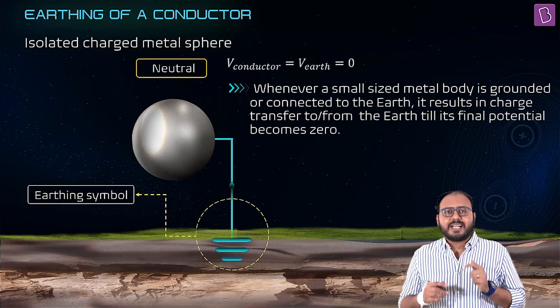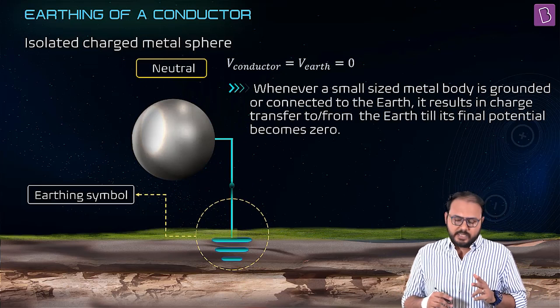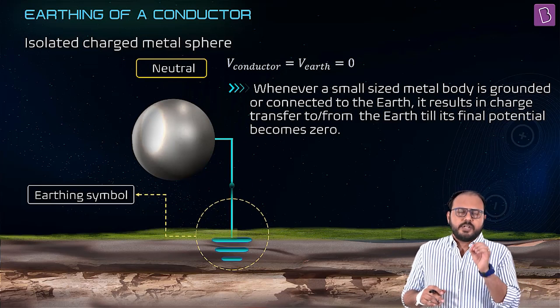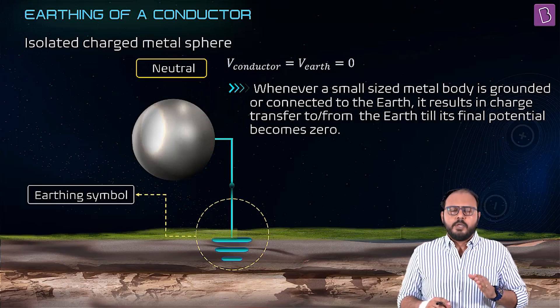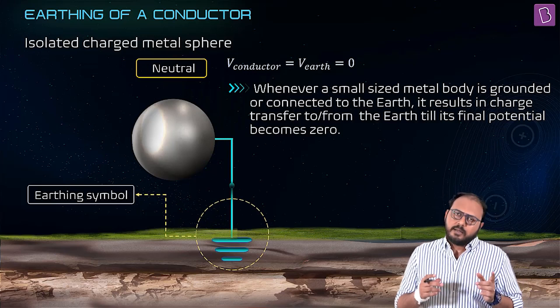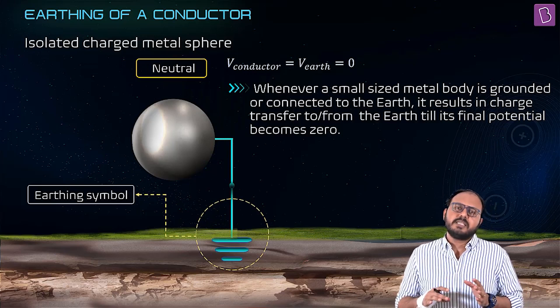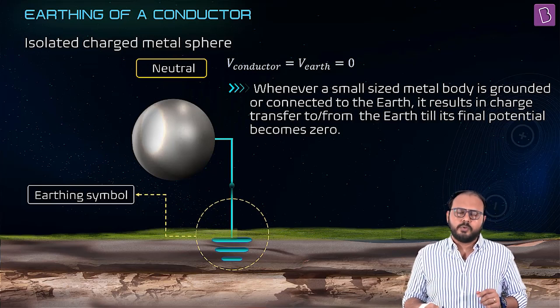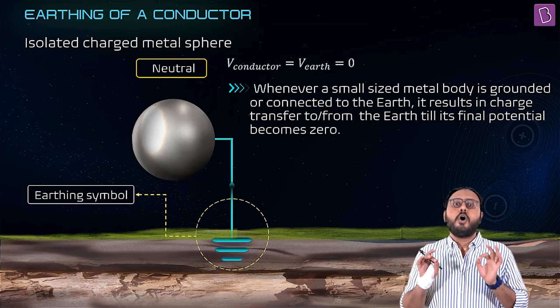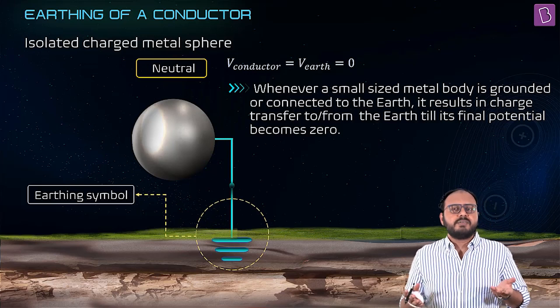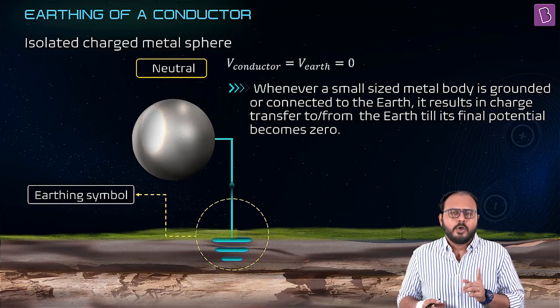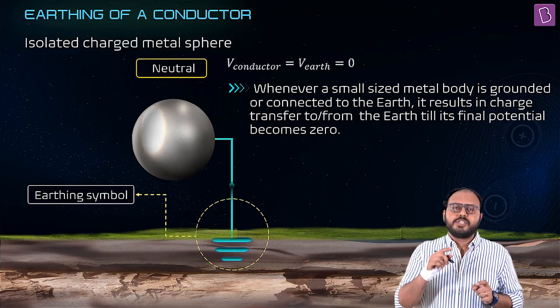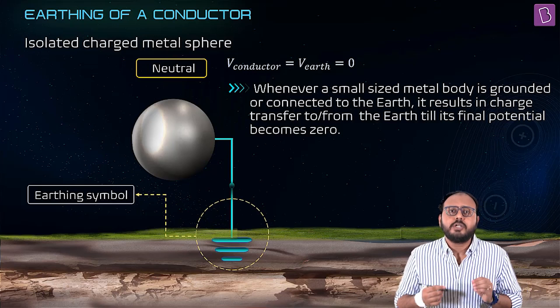See what happens. The earth gives minus Q and this minus Q mars the plus Q and makes it zero. In other words, it neutralizes the isolated metallic sphere. Immediately a question rises: are you saying that whatever you earth, its charge and potential both become zero? Horribly wrong. I never said that. Don't jump to conclusions.